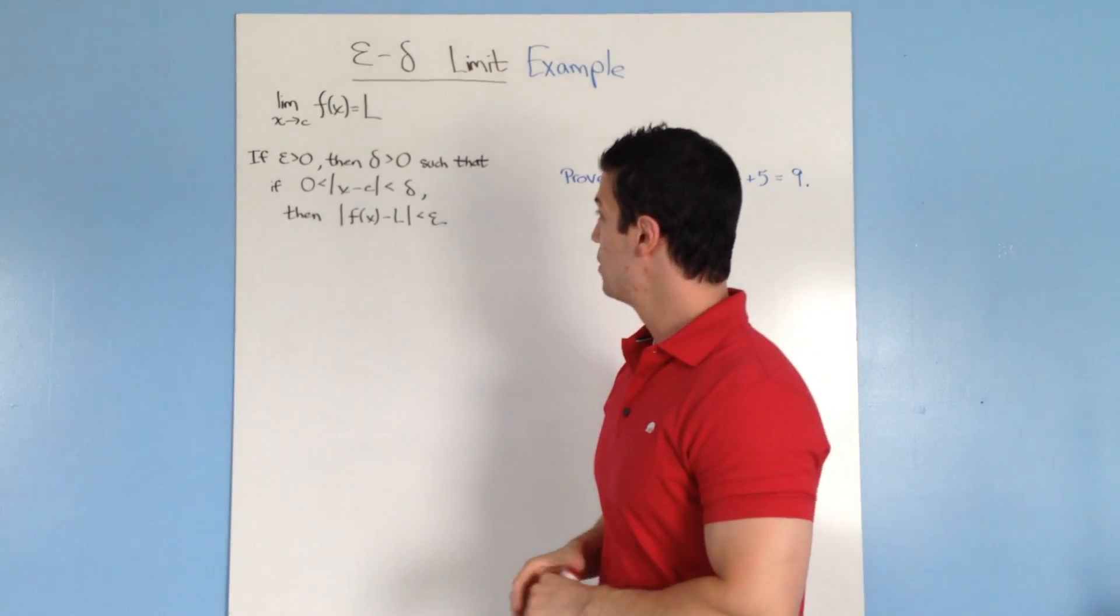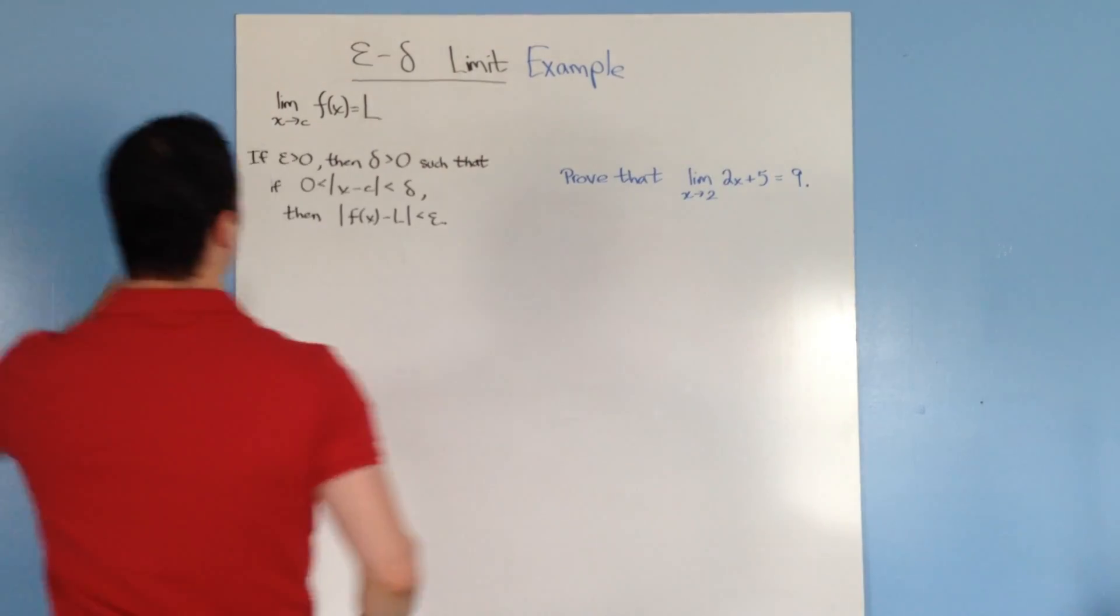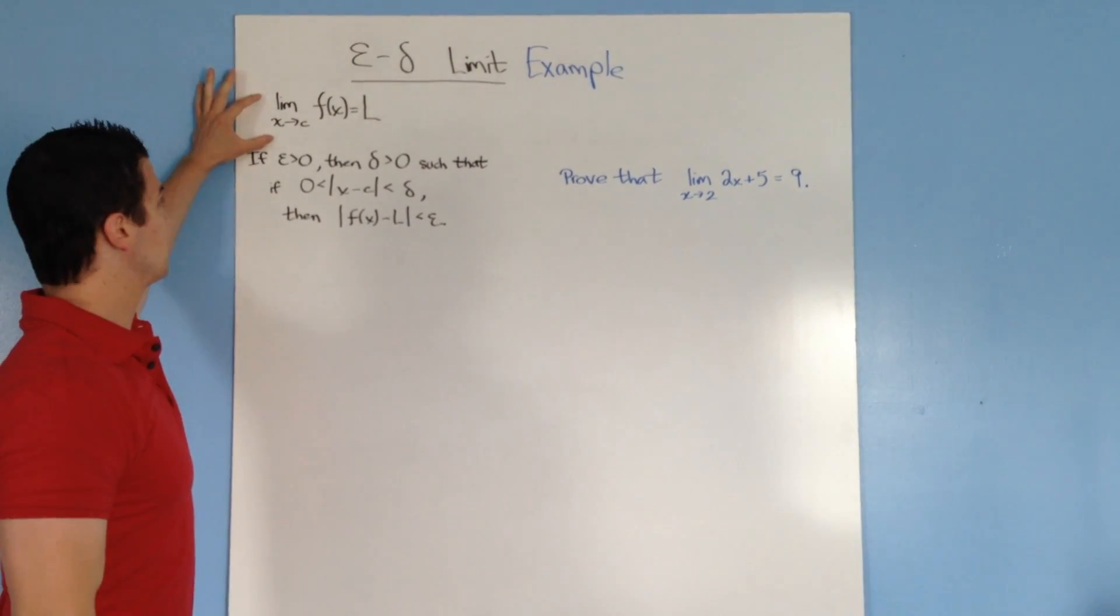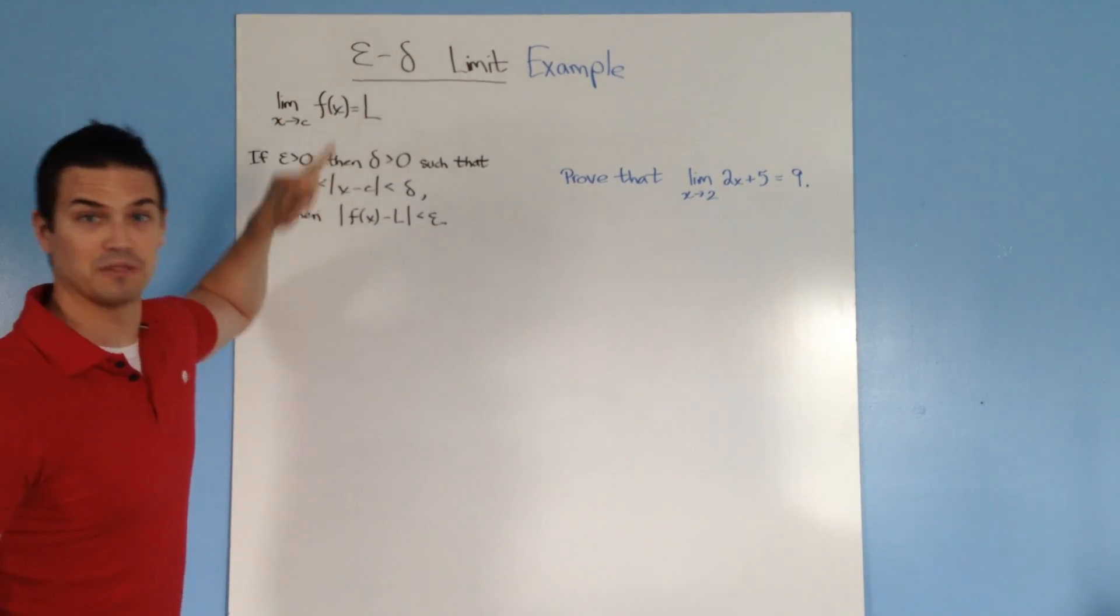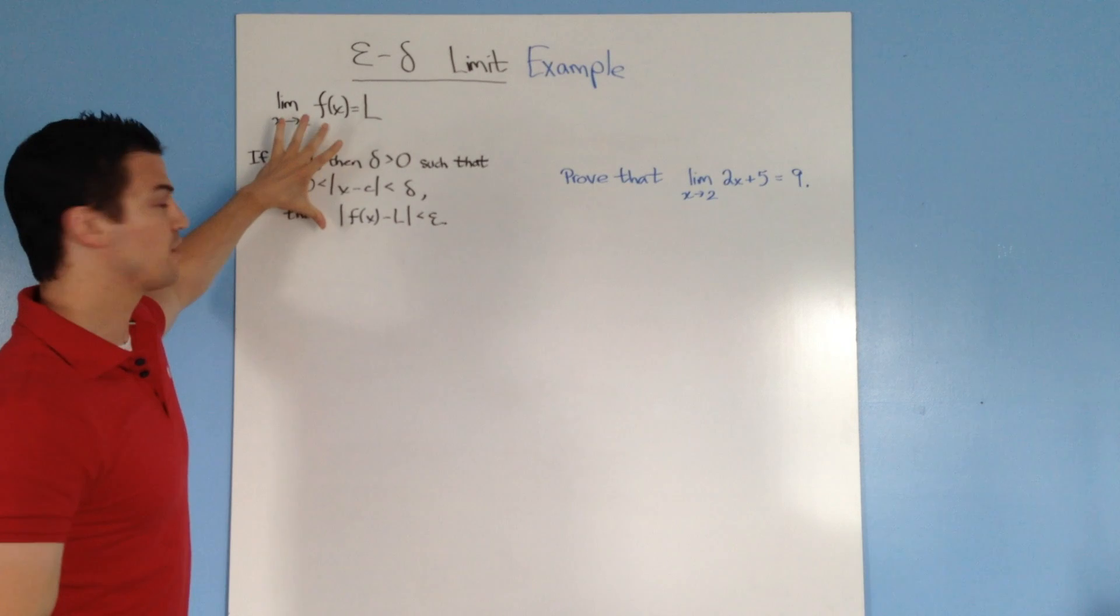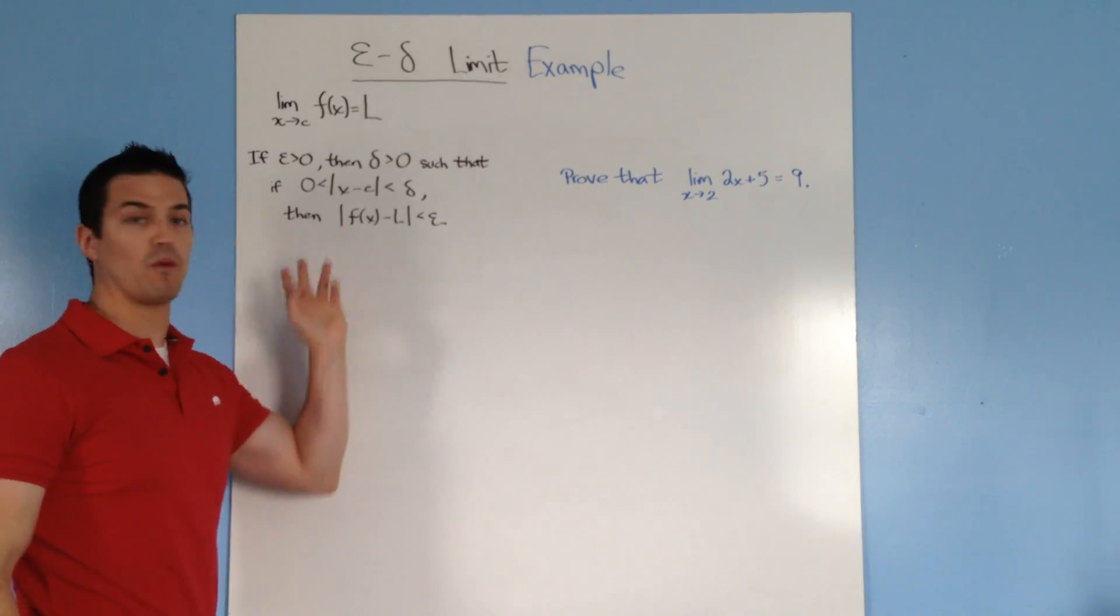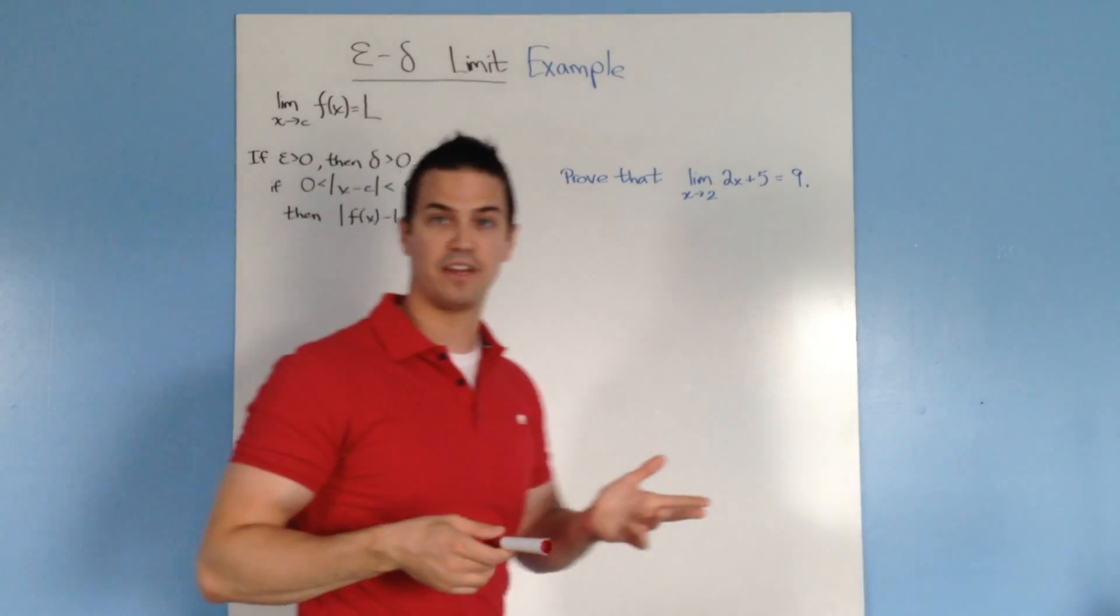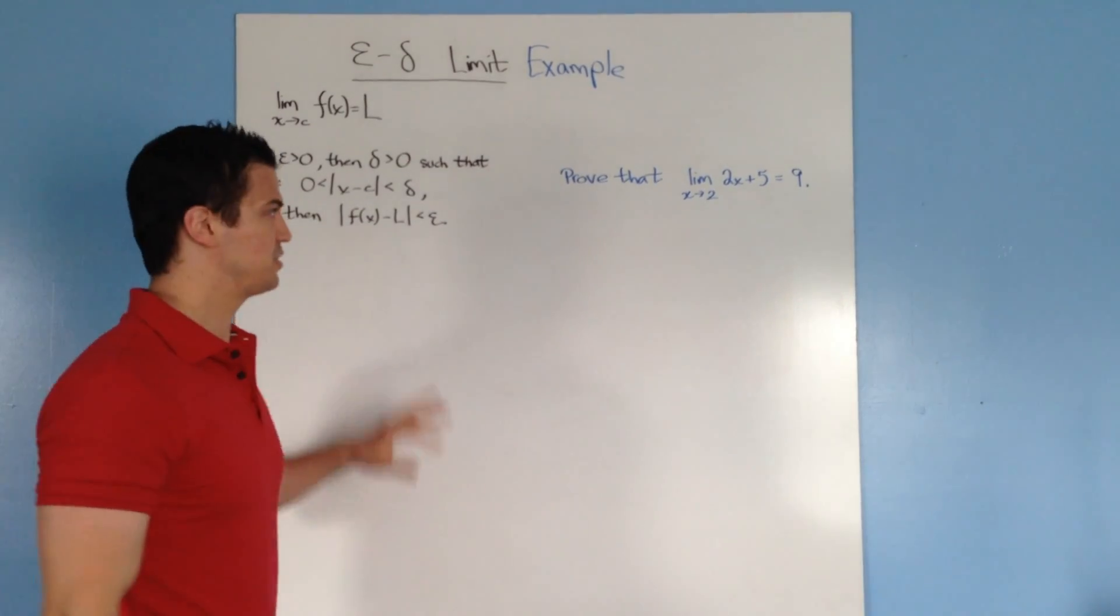So if you recall from the last video, we have our limit notation right here: the limit of f(x) as x goes to c equals L. And then we have our formal definition, the epsilon-delta definition of a limit. If you don't remember this, you probably want to look back at the previous video to get a full understanding of the formal definition.